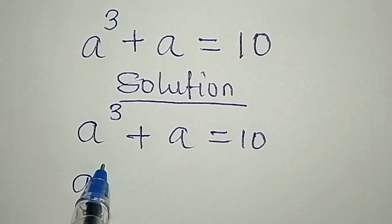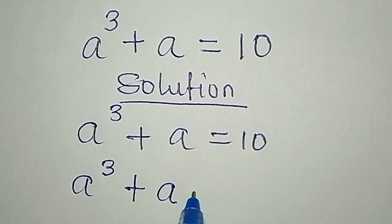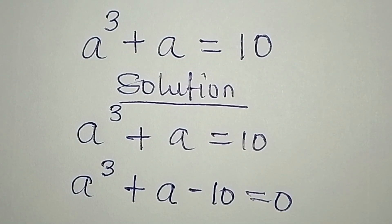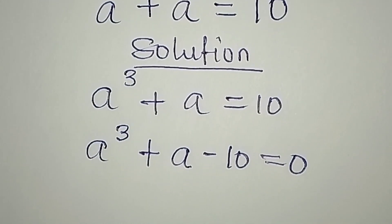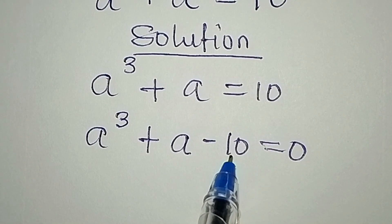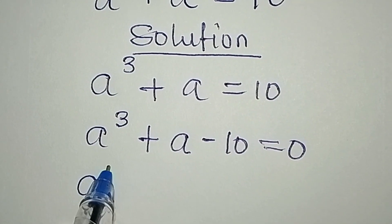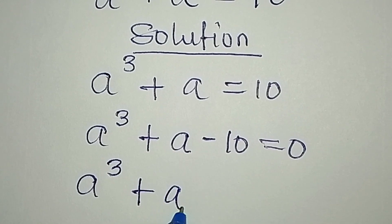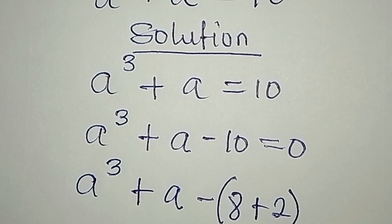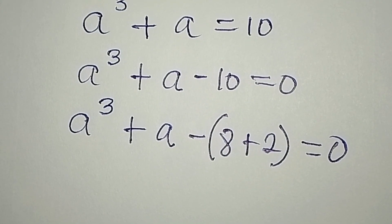So let's go. We have a to the power of 3 plus a — take this to the left, it becomes minus 10, and we have zero on the right. Now what do we do? We try to express 10 by dividing it into 2 parts, so we have a to the power of 3 plus a, then minus 10, which is 8 plus 2, and that equals zero.